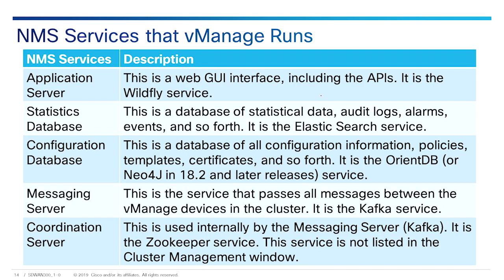The statistics database and configuration database services are going to run on an odd number of vManage devices with a minimum of three. For these databases to be writable, there must be a quorum of vManage devices running and in sync. A quorum is a simple majority — for example, in a cluster of three, two must be running and in sync; if you have nine in the cluster, five must be running and in sync. Initially, all vManage devices run the same services, but you may choose to not run some services on certain devices.